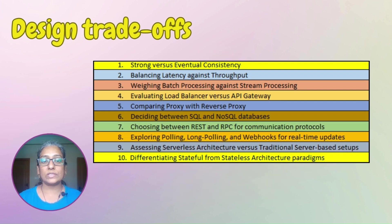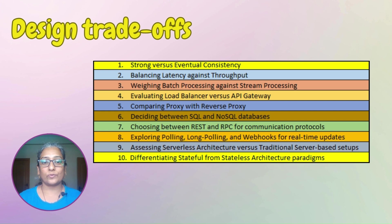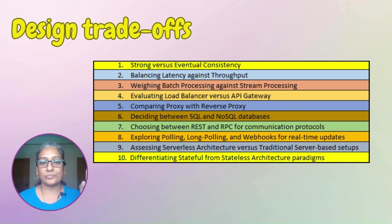System design often involves making trade-offs between different factors such as performance, cost, complexity, and ease of maintenance. Optimizing one aspect of the system may come at the expense of others. Master the art of articulating system design trade-offs and hone your decision-making abilities. Some of the design trade-offs worth exploring are listed here — you can pause and note down the list.